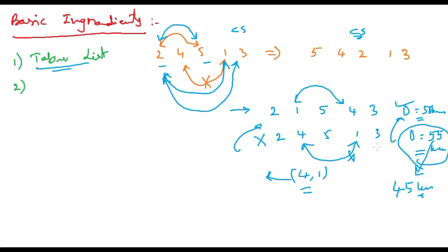So this covers the basic ingredients of taboo search. In the next video we will discuss the direct algorithm and then the flowchart. Thank you so much.